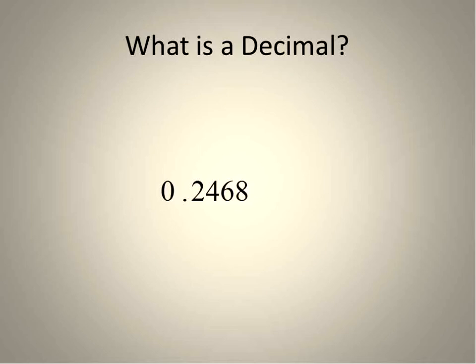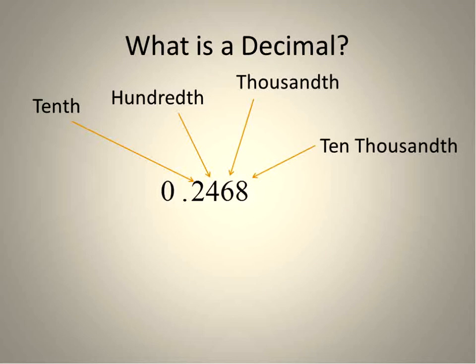A decimal is when you have a number like 0.2468. The first number after the decimal, or the first number on the right of the decimal, is the tenths, then the hundredths, the thousandths, and the ten thousandths.